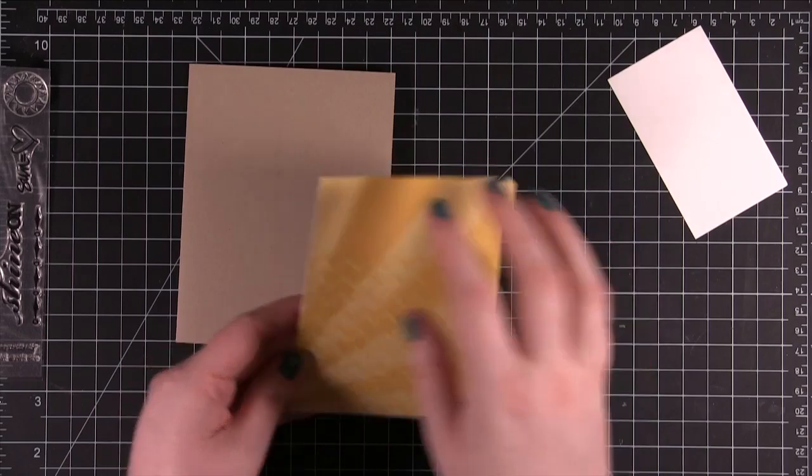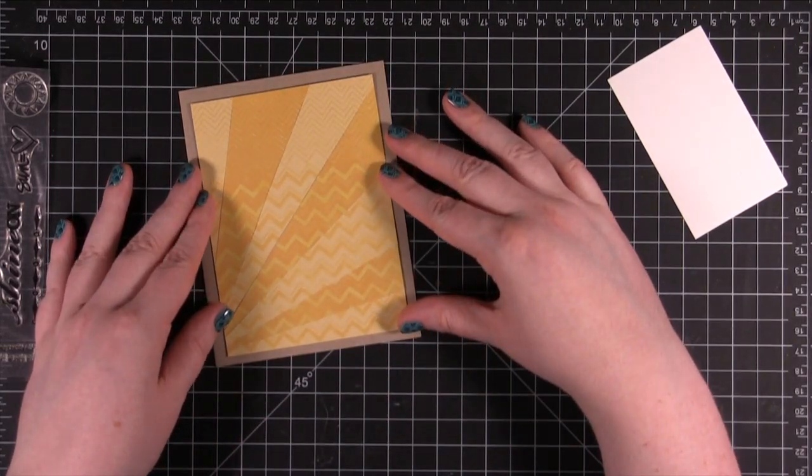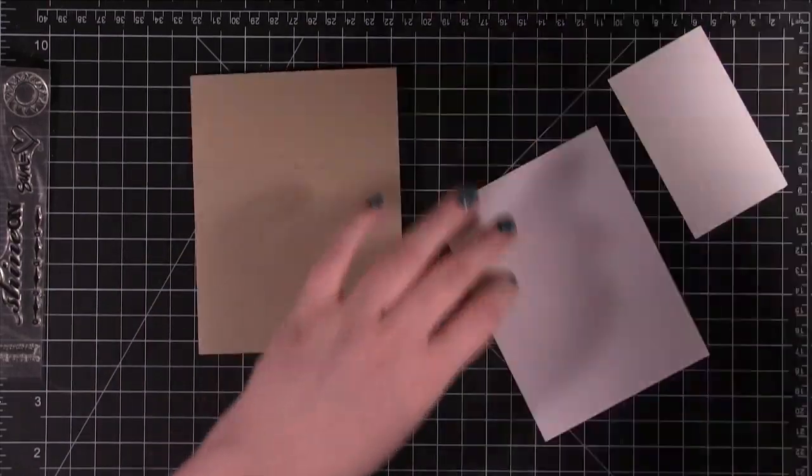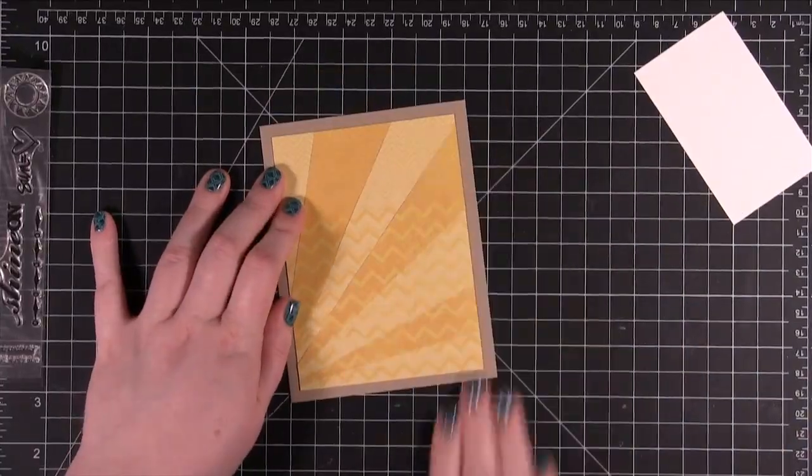All right, so this is what it looks like. I cut about half an inch off each edge so that I could mat it on the front of a card. So I'm going to go ahead and adhere this down. All right, just like that.